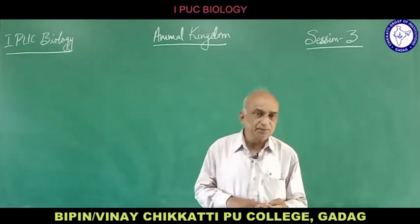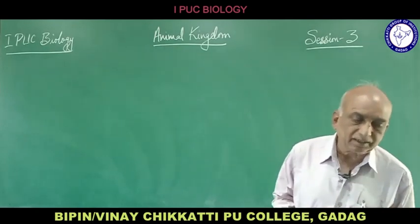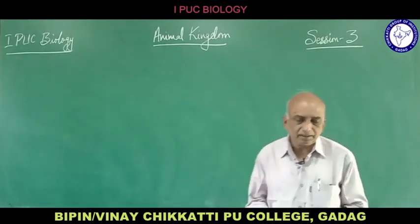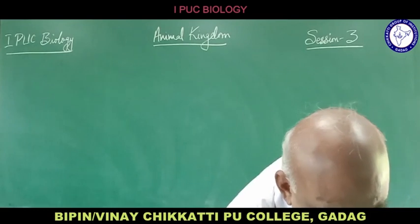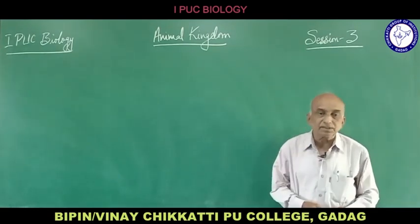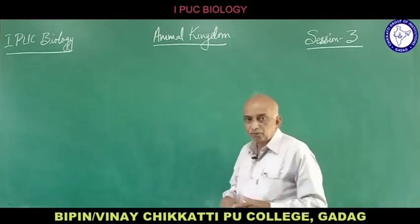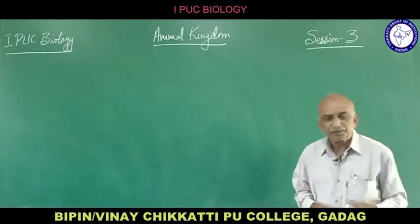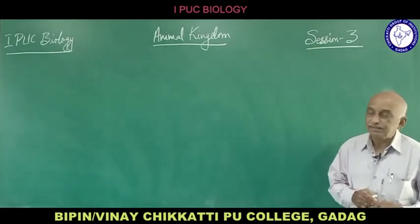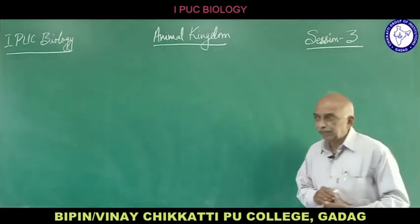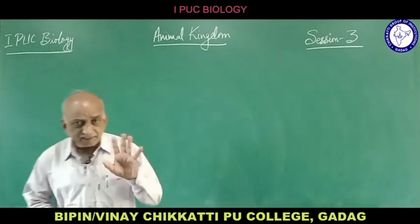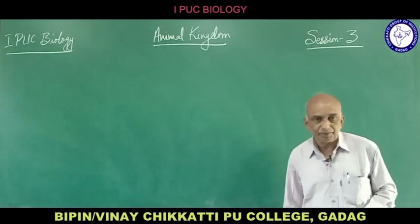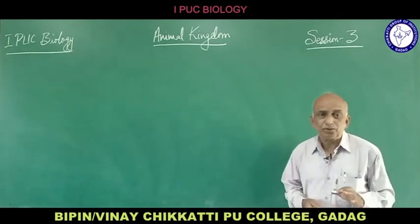Phylum Chordata has three important characters: presence of a notochord, presence of pharyngeal gill slits, and bilateral symmetry. They are triploblastic animals. There is also a nerve cord which is dorsal in position and hollow — the dorsal hollow nerve cord. Presence of pharyngeal gill slits is another key character.